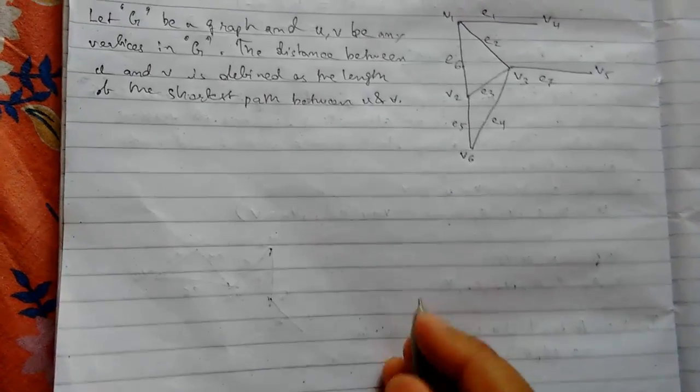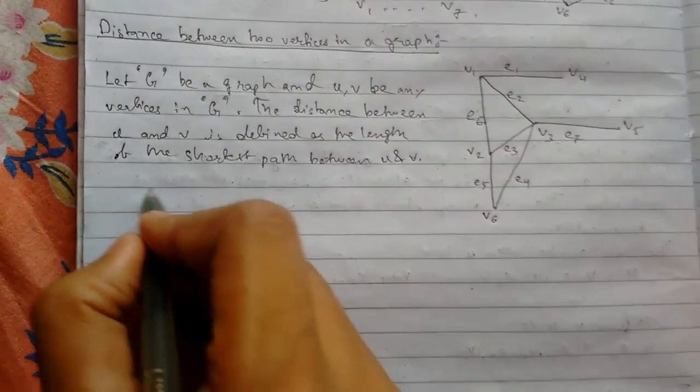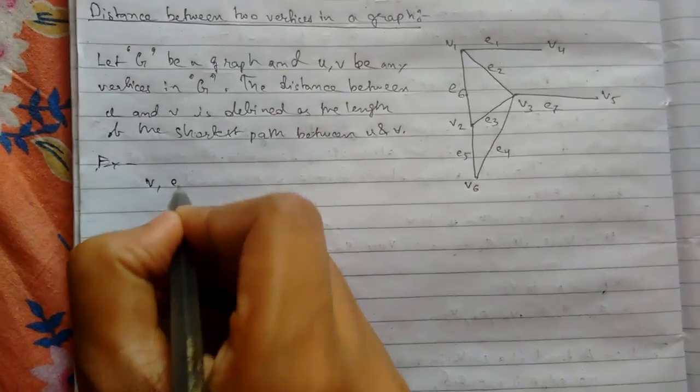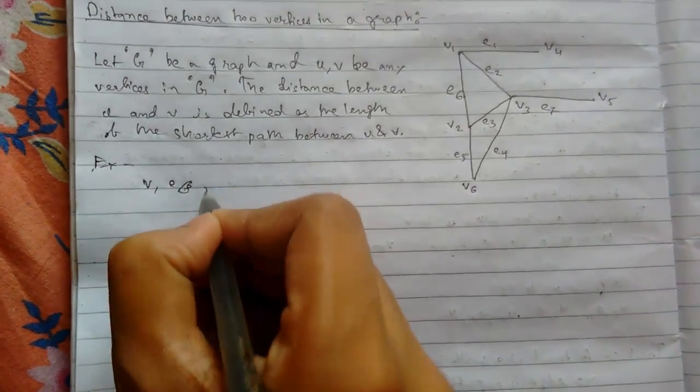Let me show you an example. Suppose we have something like this example. We have v1, e6, and v2.